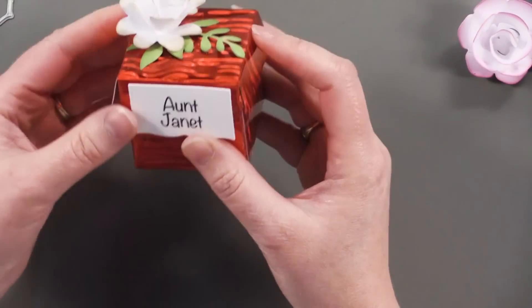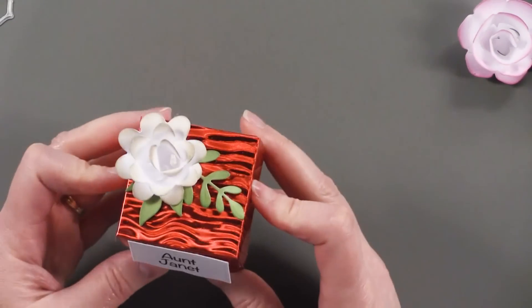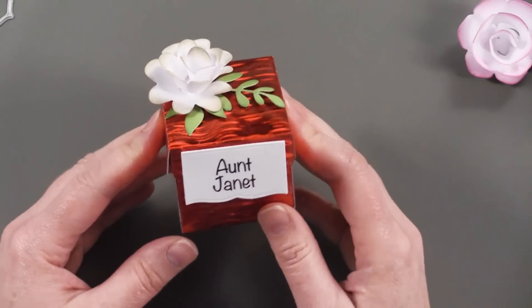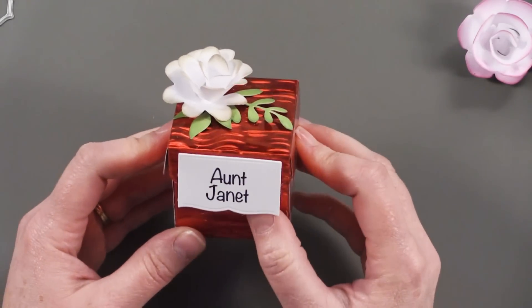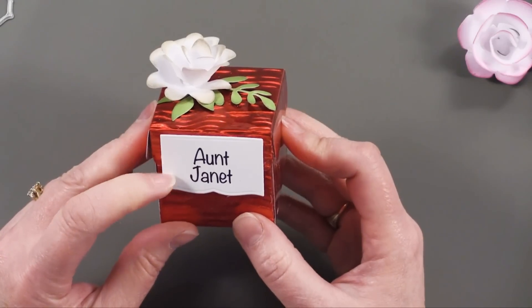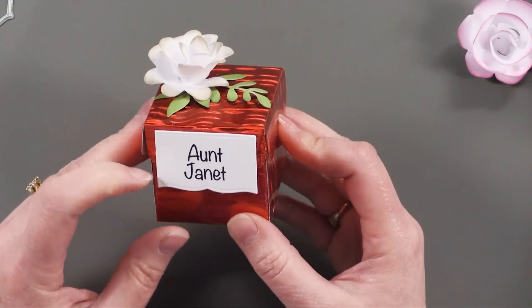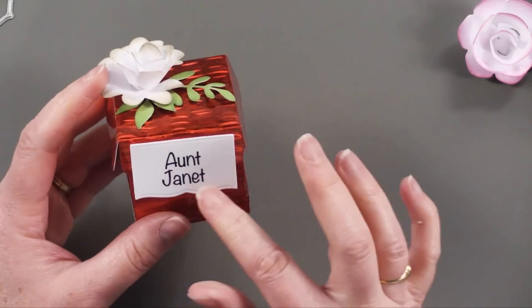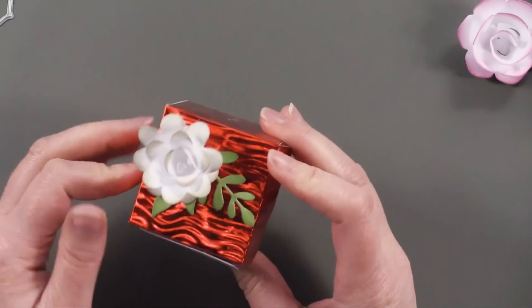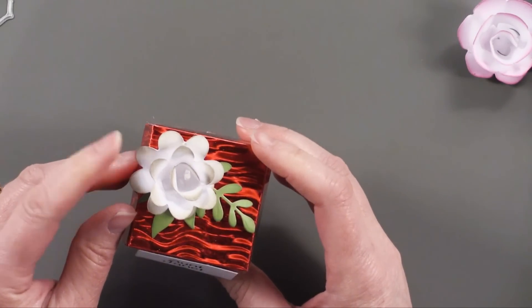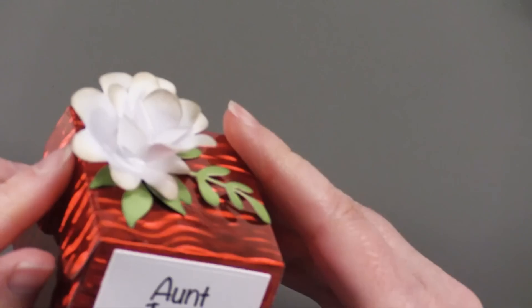So I thought it would also make a really fun Christmas-themed table place card setting. So each one of your guests could have their own little box with their name on it. I just used my computer and printer for each name and then die cut it with one of the little edges for the box and then just glued it all together. And then I edged my white flower with gold ink.